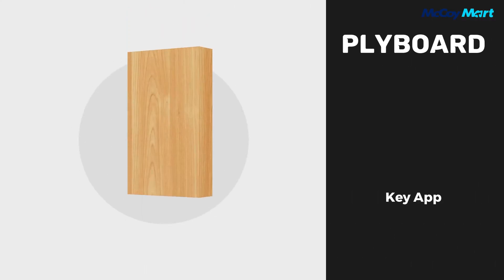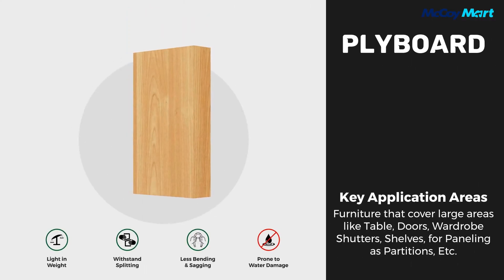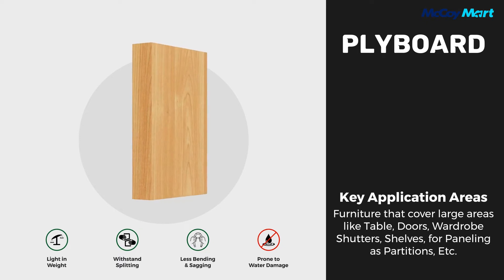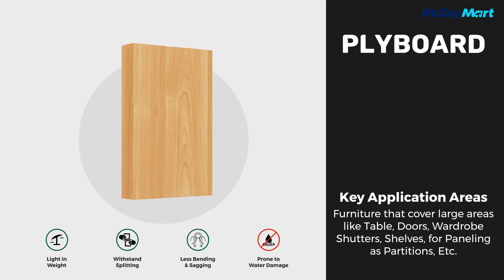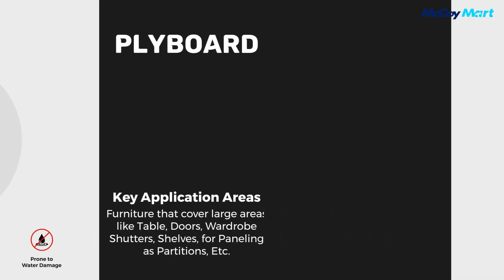Next up is ply board. These are used in furniture that covers large areas like cable doors, wardrobe shutters, etc. It is light in weight, withstands splitting, has less bending and sagging, but is prone to weather damage.